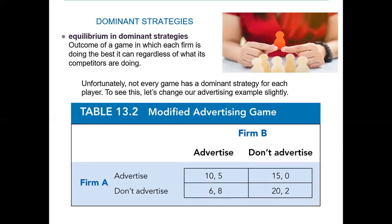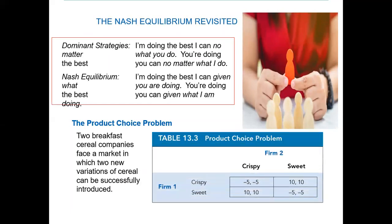What is the difference between dominant strategy and Nash equilibrium? In dominant strategy, I'm doing the best I can regardless of what you do — your choice doesn't matter to my decision. In Nash equilibrium, I'm doing the best I can given what you do — I take your actions into consideration. As a production choice problem between two firms producing 'Crispy' and 'Sweets' cereal shows, Nash takes the opponent's action into account.